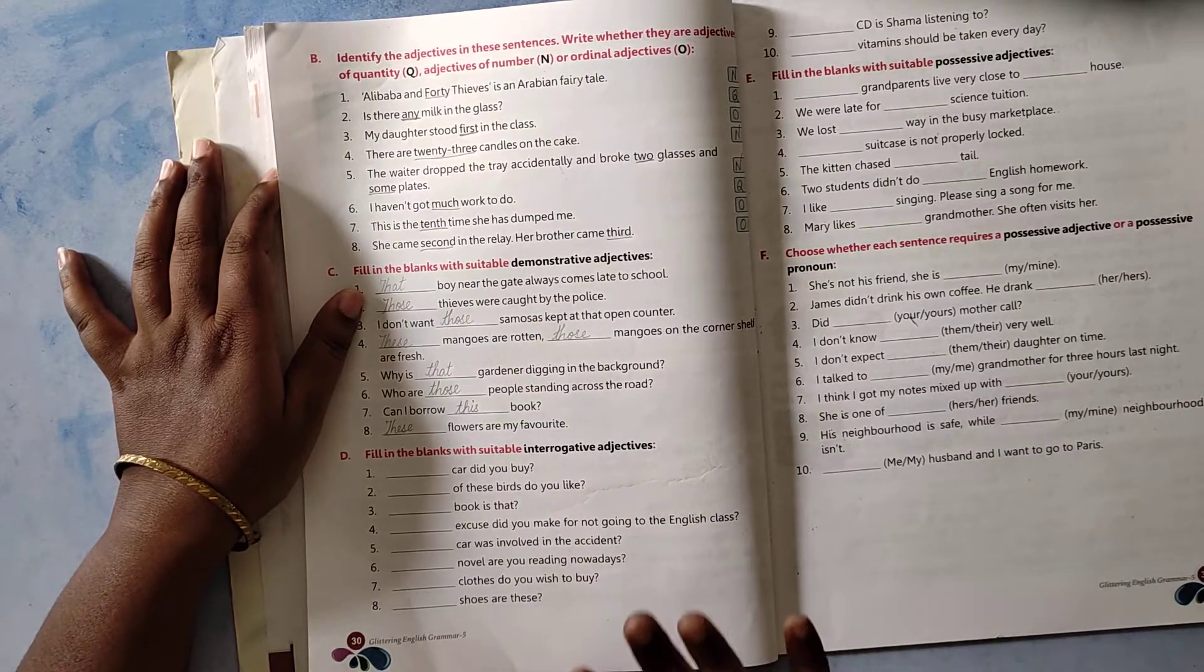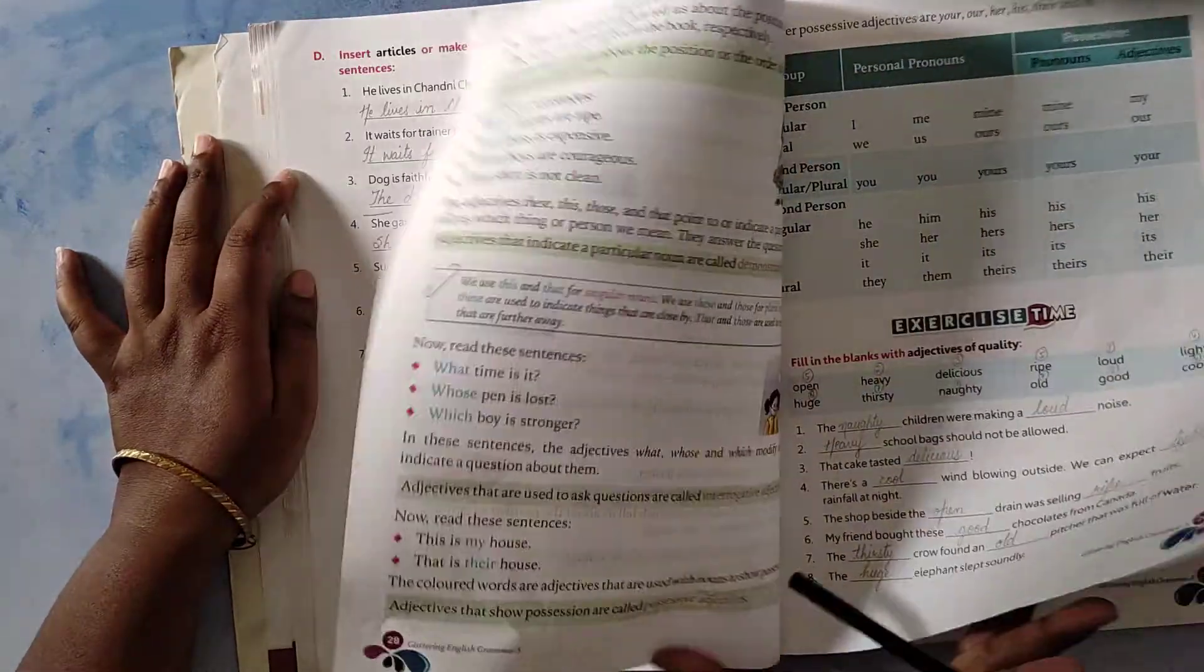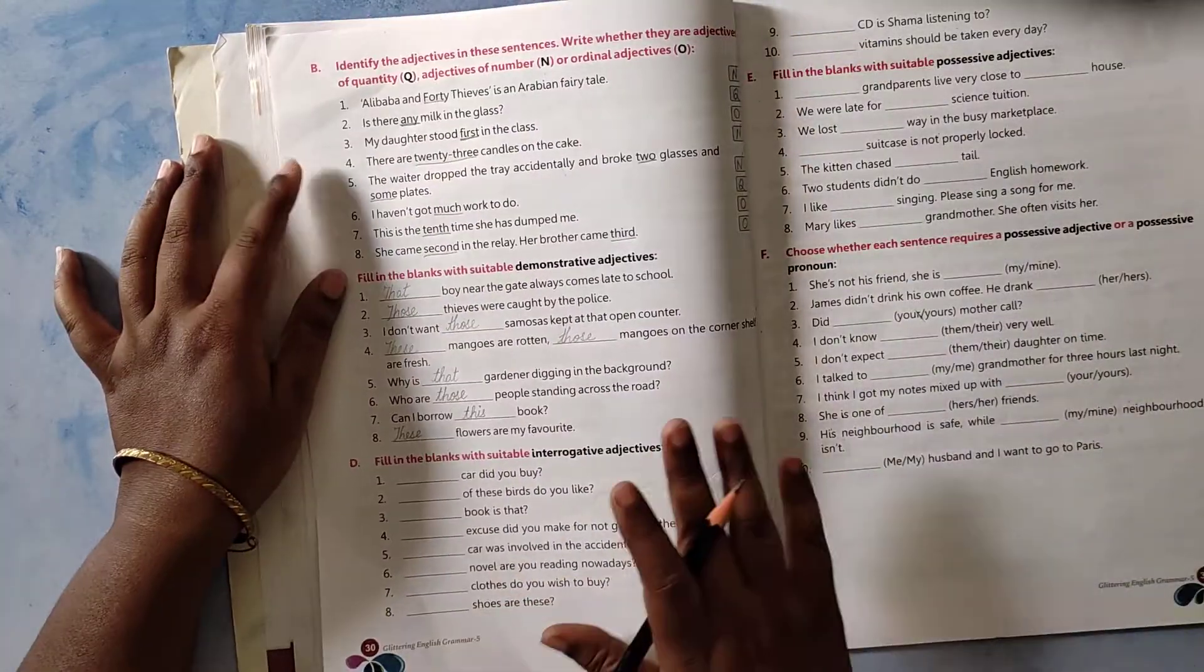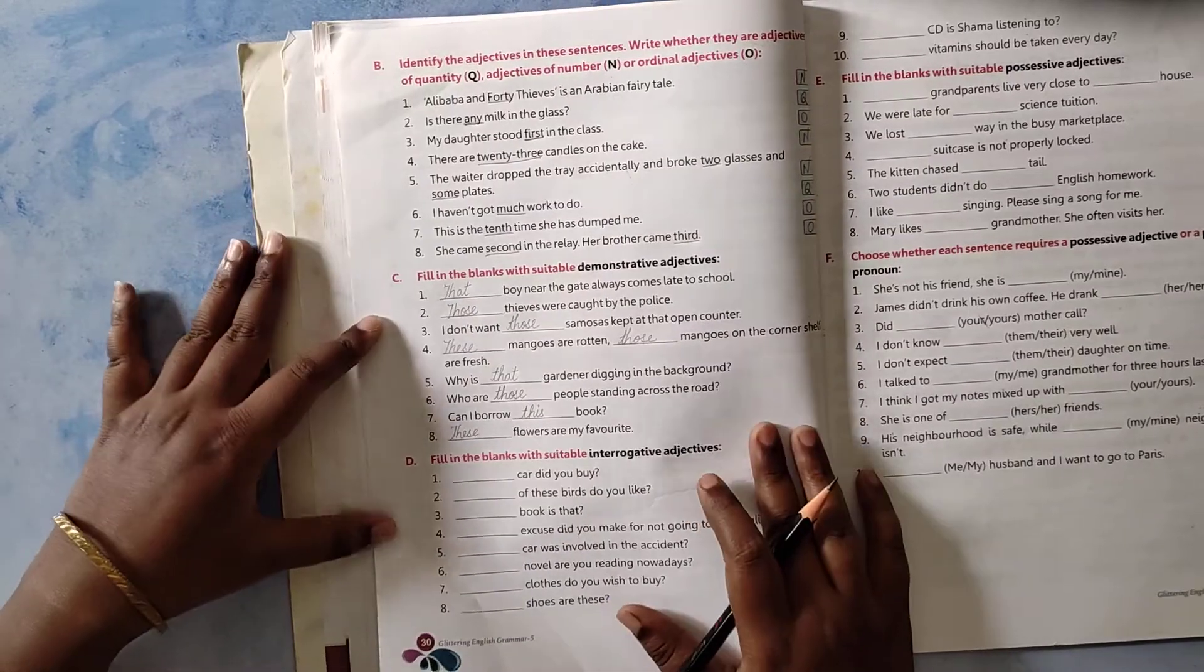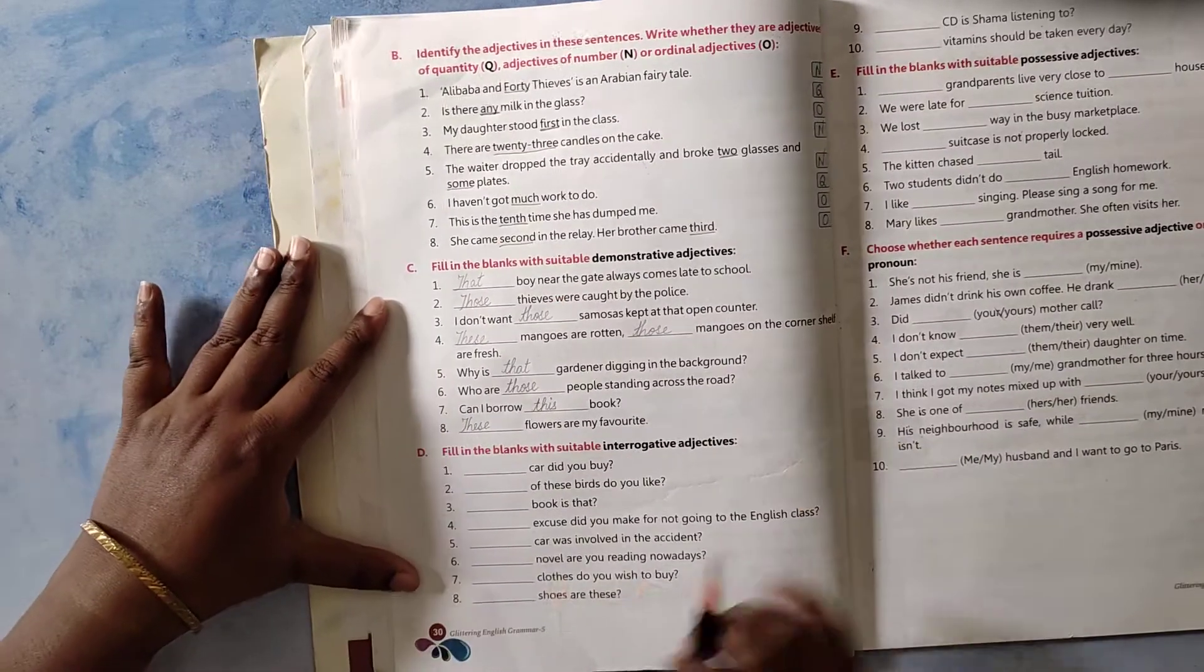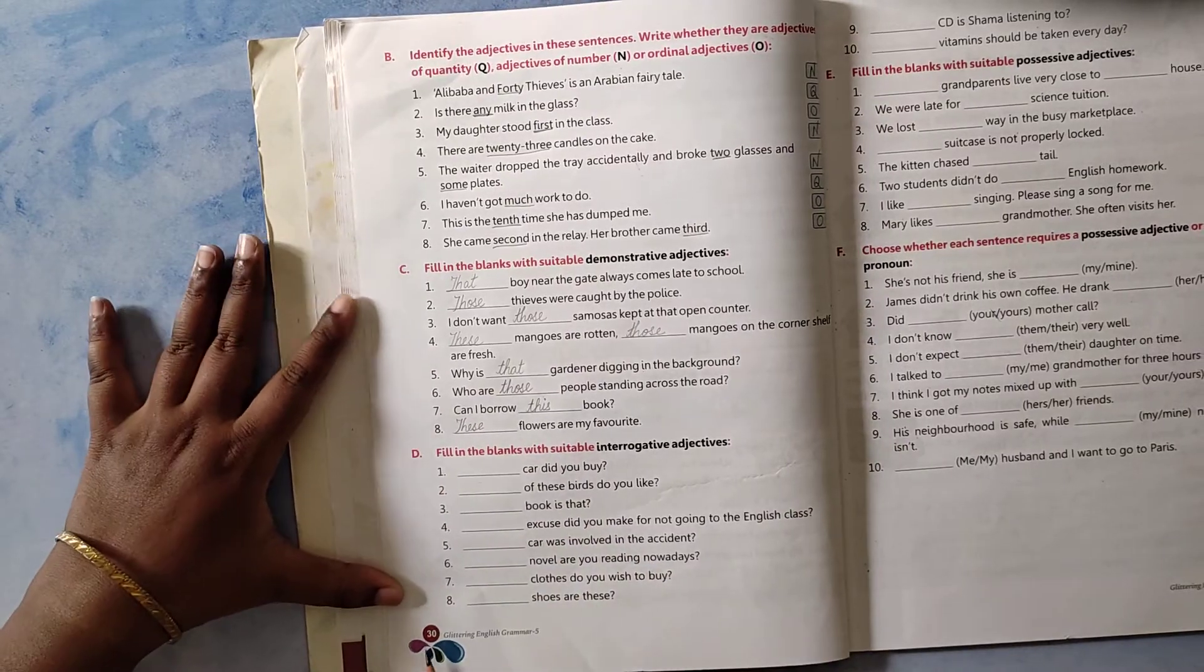In the previous video we have started chapter number 6, kinds of adjectives and have done some exercises. Up to exercise C we have done. Today new exercise, exercise D, page number 30.